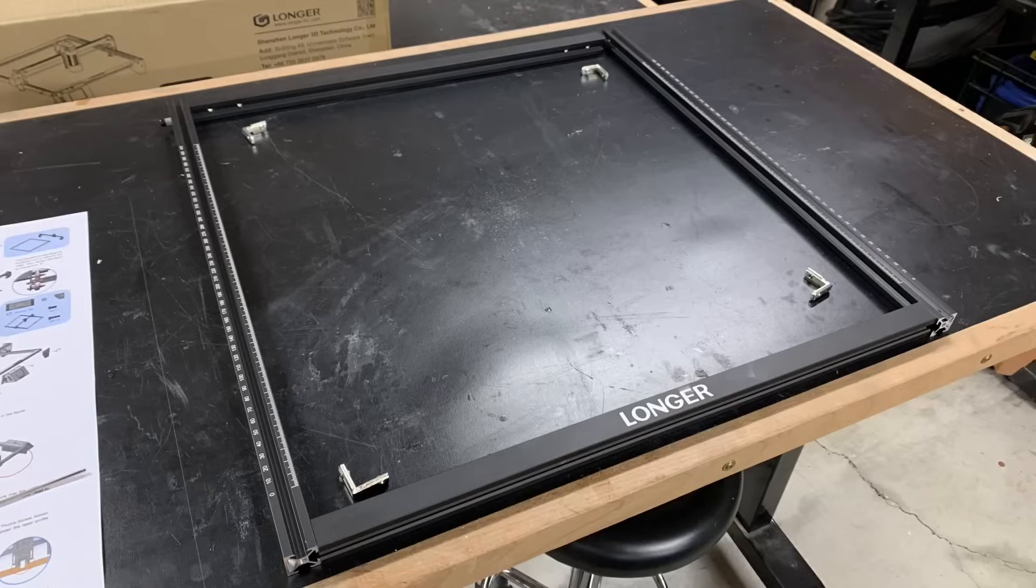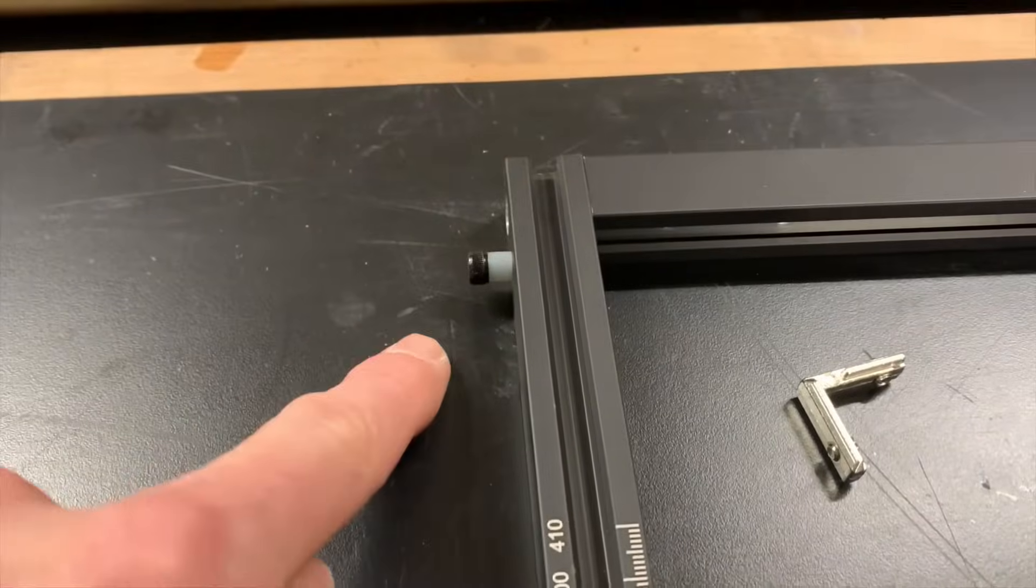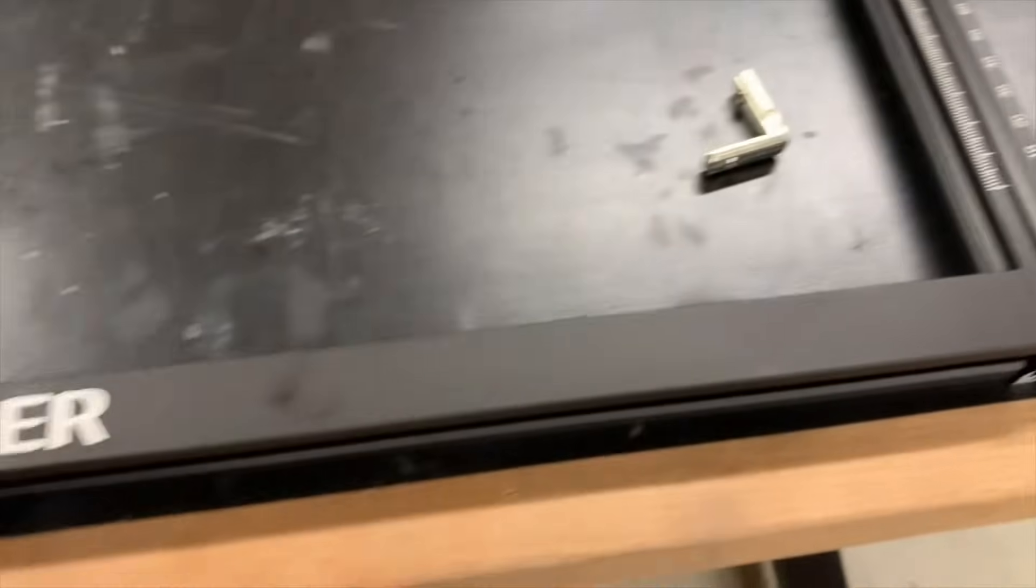Before I assembled the frame, I made sure all the pieces of extruded aluminum were properly laid out. The left side y-axis rail has a rear limit stop already installed. The right side does not. It's also important that on the x-axis rails the flat sides face up.